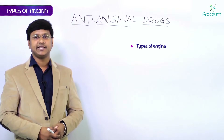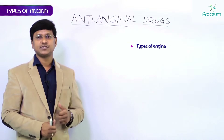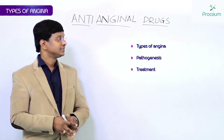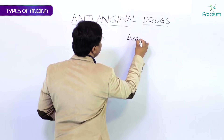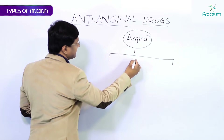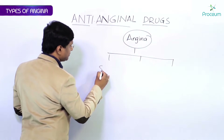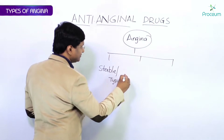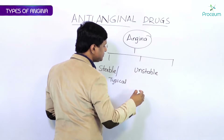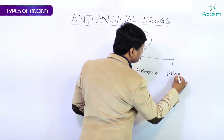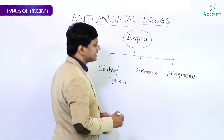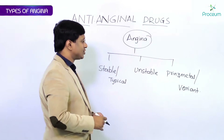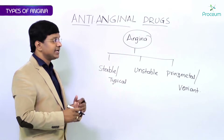After having discussed the various types of anti-anginal drugs, let me now discuss the types of angina, the basic pathogenesis in each type, and the drugs used for each. We have three important types of angina: stable or typical angina, unstable angina, and Prinzmetal angina, also called variant angina.